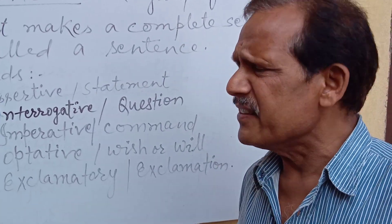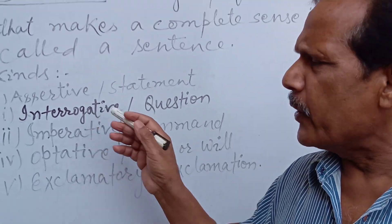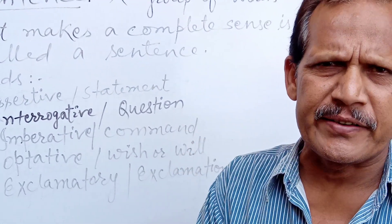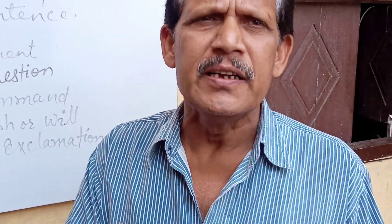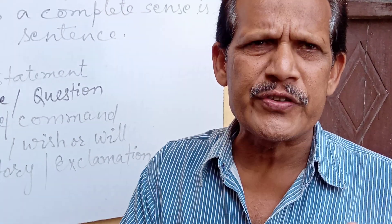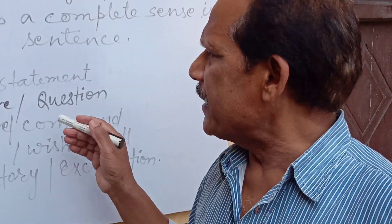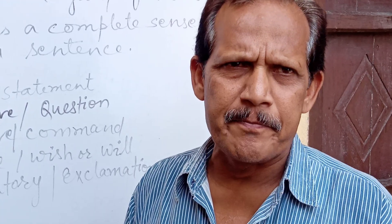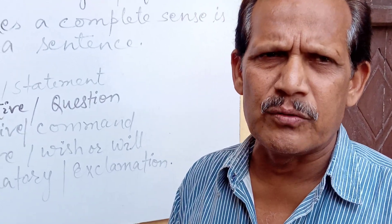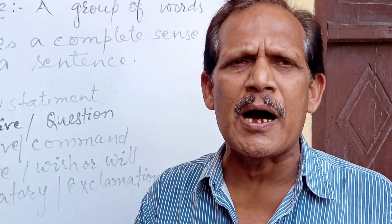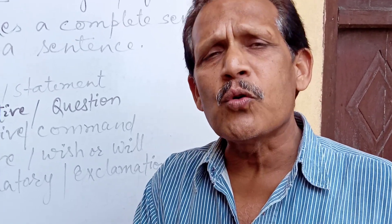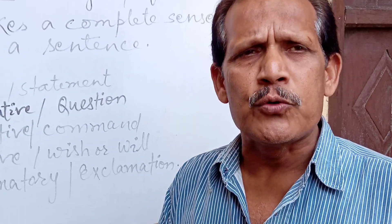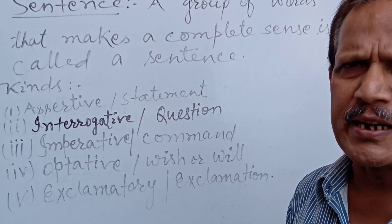The second is the interrogative sentence. The word 'interrogative' comes from 'interrogate', which means to question, to ask, to seek information. An interrogative sentence is a sentence that stands for a question — a sentence that asks a question, which is used to ask a question. That is the question sentence or interrogative sentence.